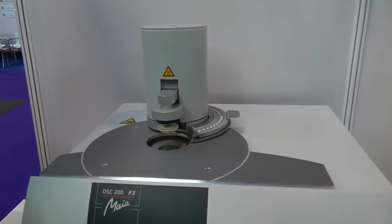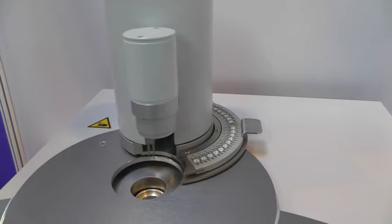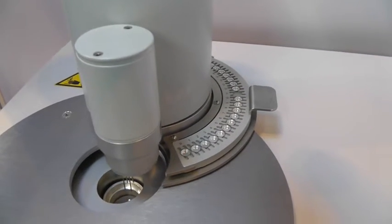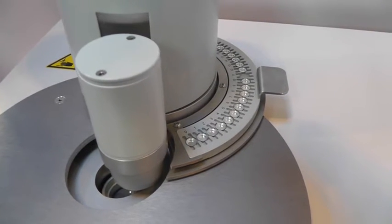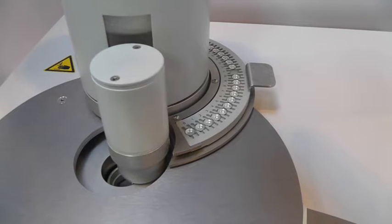This particular system is mounted with an automatic sample changer. What this automatic sample changer is doing with these four probe pins here is picking up an empty crucible, taking it out and putting it onto the carousel.